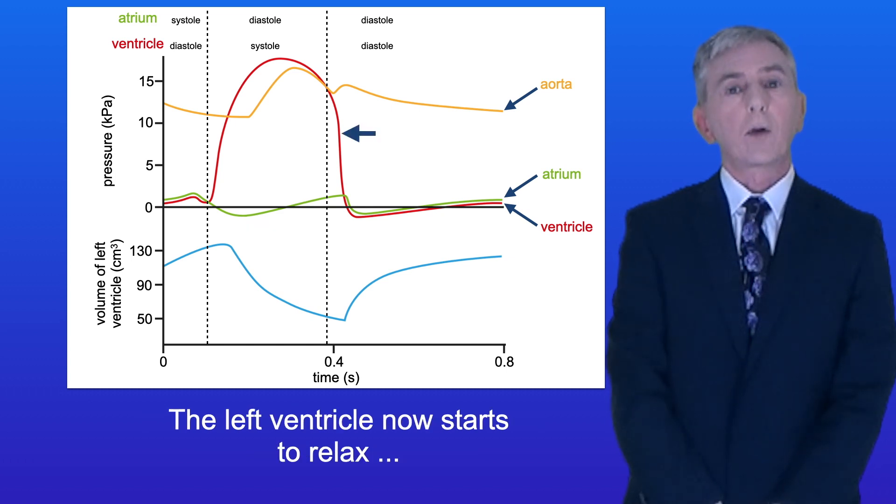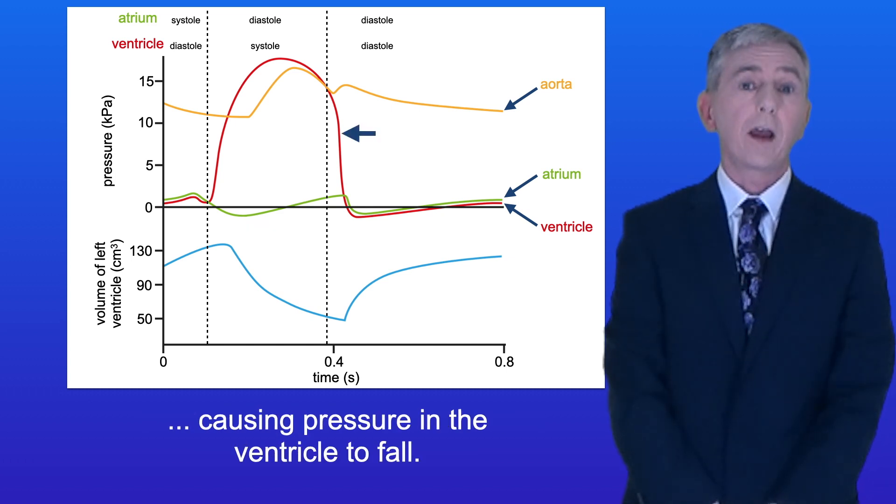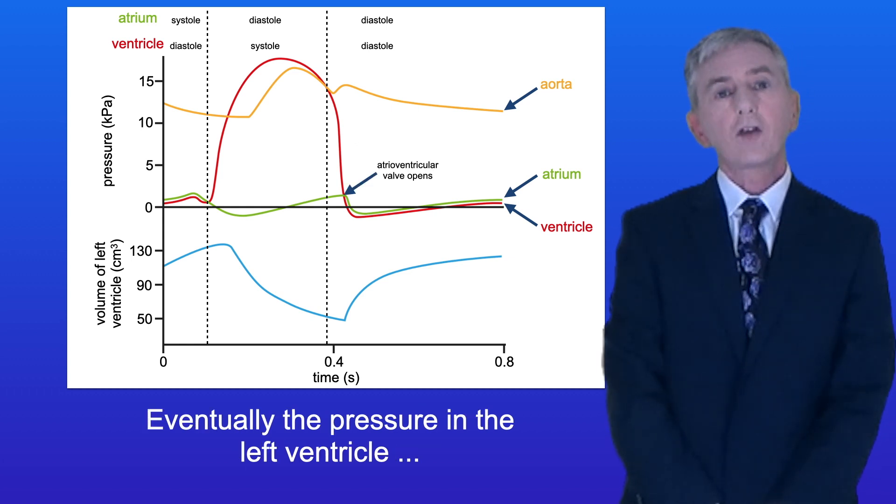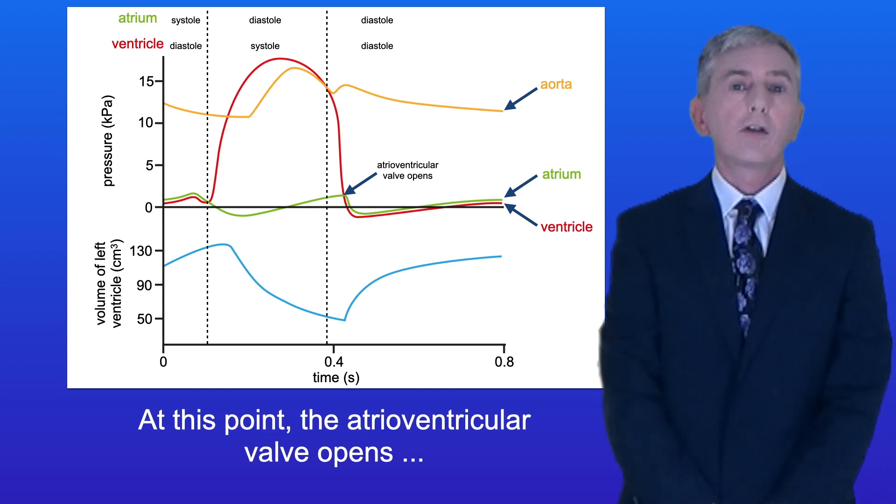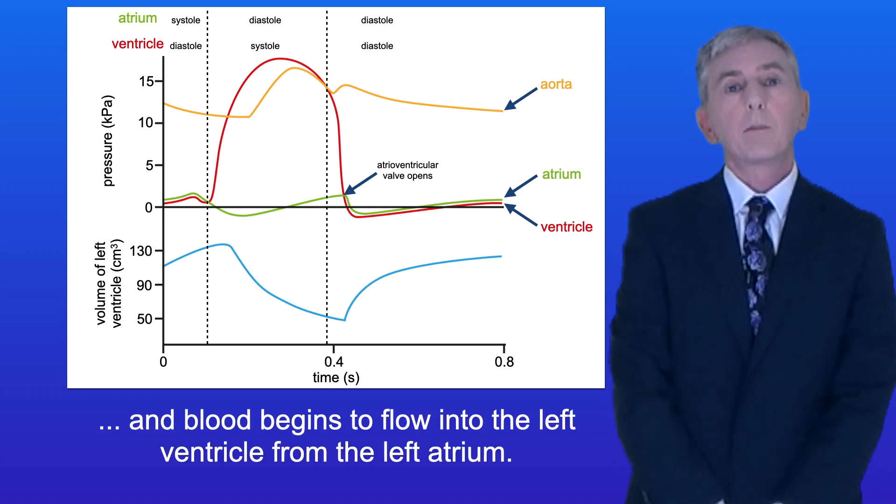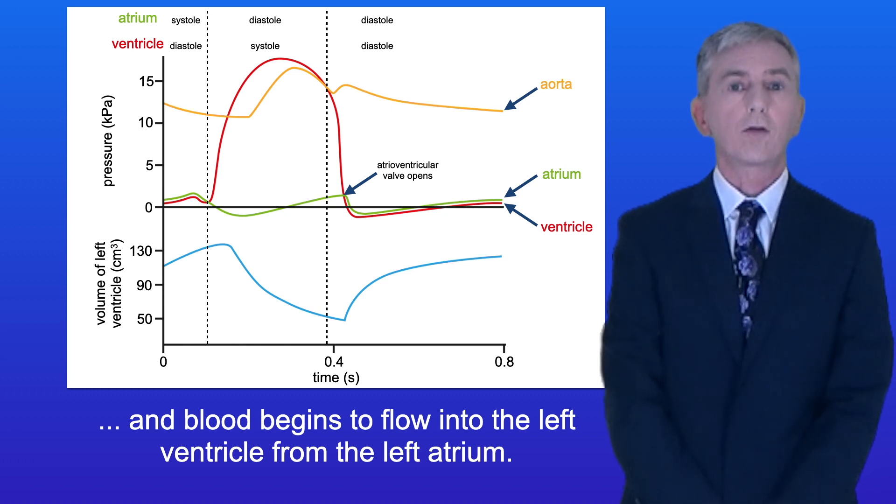The left ventricle now starts to relax, causing pressure in the ventricle to fall. Eventually the pressure in the left ventricle falls below the pressure in the left atrium. At this point, the atrioventricular valve opens and blood begins to flow into the left ventricle from the left atrium.